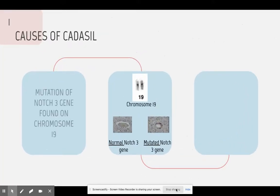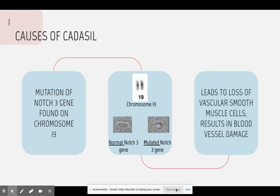Causes of CADASIL. CADASIL is caused by the mutation of the NOTCH3 gene found on chromosome 19. Here in the middle is a picture of chromosome 19 and the NOTCH3 gene. On the left is a picture of the NOTCH3 gene, and on the right is a picture of a mutated NOTCH3 gene. This mutation can lead to protein misfolding and receptor aggregation in the brain. The NOTCH3 gene is a protein-coding gene, and this gene is essential for the maintenance of blood vessels. This disruption in the mutated gene can cause brain cells to self-destruct, and this self-destruction of brain cells can lead to irreversible brain damage and damage to the blood vessels.